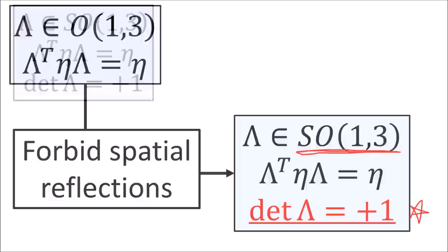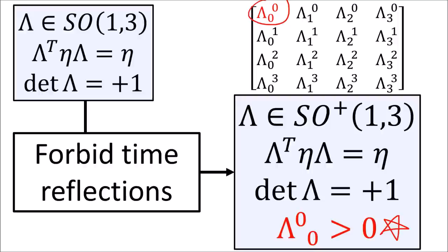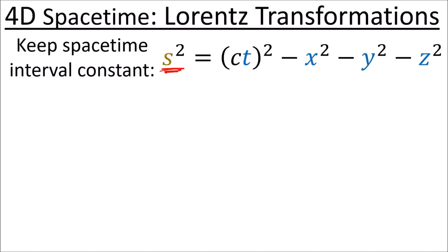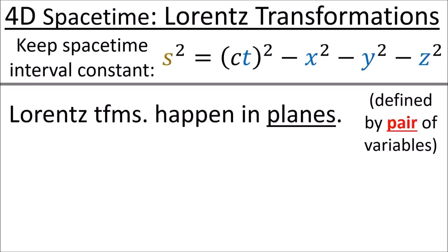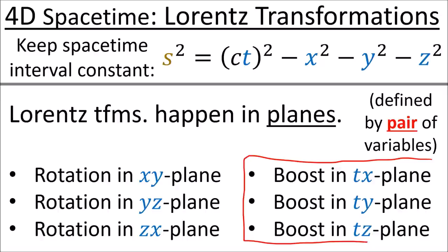In 4D spacetime, the squared spacetime interval is w-transpose eta w, where eta is the Minkowski metric. A transformation lambda keeping s squared constant must satisfy lambda-transpose eta lambda equals eta, placing lambda in O(1,3). Forcing determinant plus 1 gives SO(1,3), and demanding the top-left entry of lambda is positive gives the orthochronous condition SO+(1,3). These Lorentz transformations act in planes defined by pairs of coordinates: xy, yz, zx, tx, ty, and tz — giving six basic types. Three are spatial rotations and three are Lorentz boosts, which are hyperbolic rotations using hyperbolic cosine and sine.